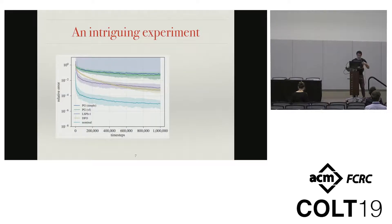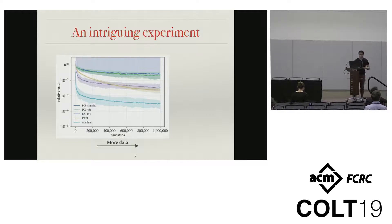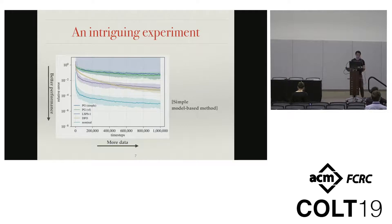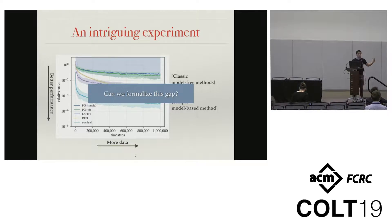I'm going to preview the result first with an experiment. We have a simple three-dimensional LQR problem, and I'm going to plot a lot of model-free algorithms against a very simple model-based algorithm. On the x-axis we give these algorithms more data, and on the y-axis we show the error — lower and to the right as fast as possible is where you want to be. The blue line is the simple model-based method, and it has quite a bit of a gap compared to classical model-free methods such as policy gradients, policy iteration, or a random search-driven optimization. The question we're going to ask is to what extent we can actually formalize this gap.